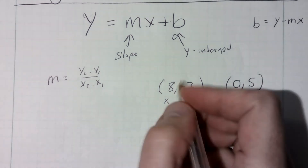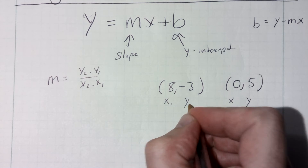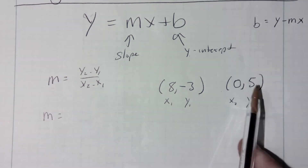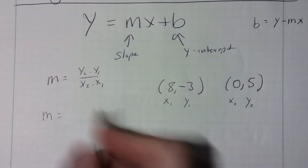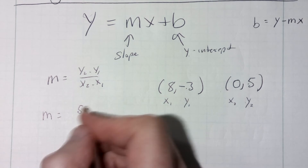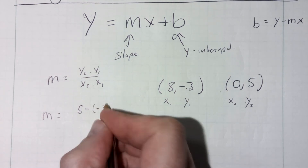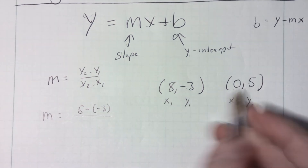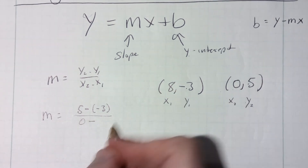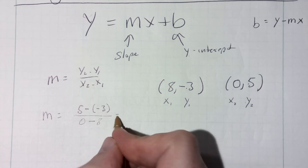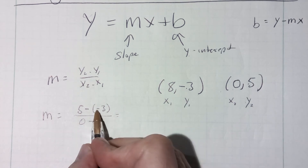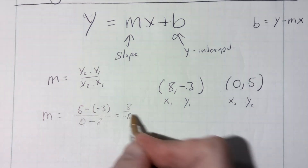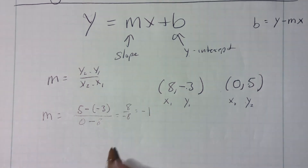The way we're going to find the slope is I'm going to label the first point x1, y1 and the second point x2, y2. So I can find my slope by taking the second y value, minusing off the first y value — and I've got to be careful because I'm minusing a negative — divided by the second x value, which is zero, minus the first x value, which is eight. Five plus three, because minus and minus becomes plus, gives eight. Zero minus eight is negative eight, which reduces to negative one. So my slope is negative one.